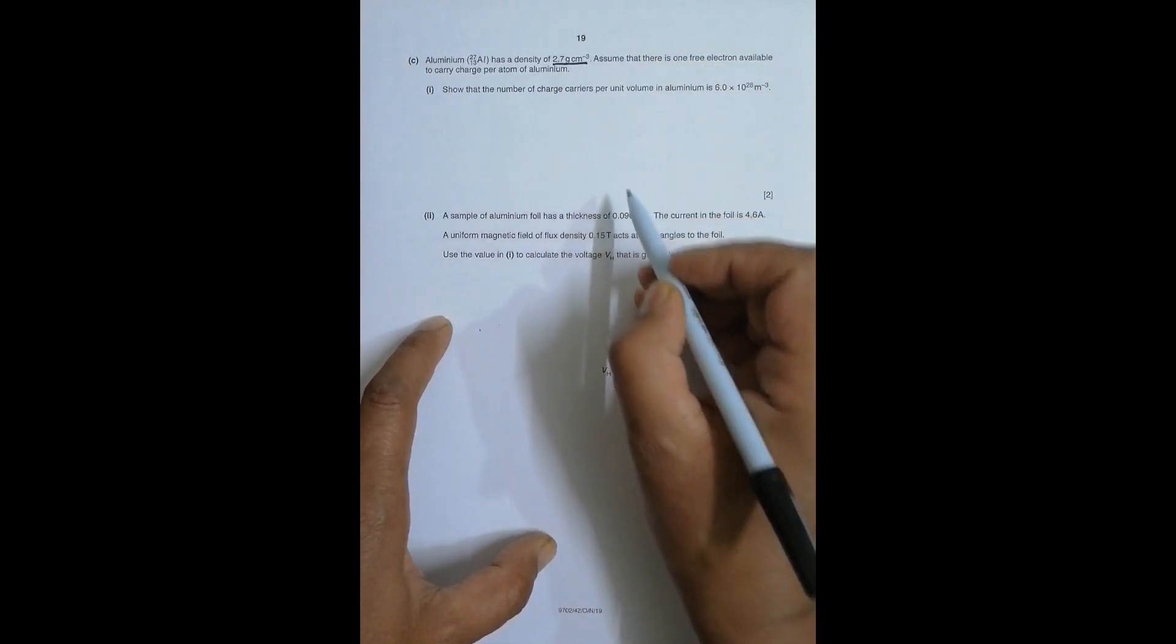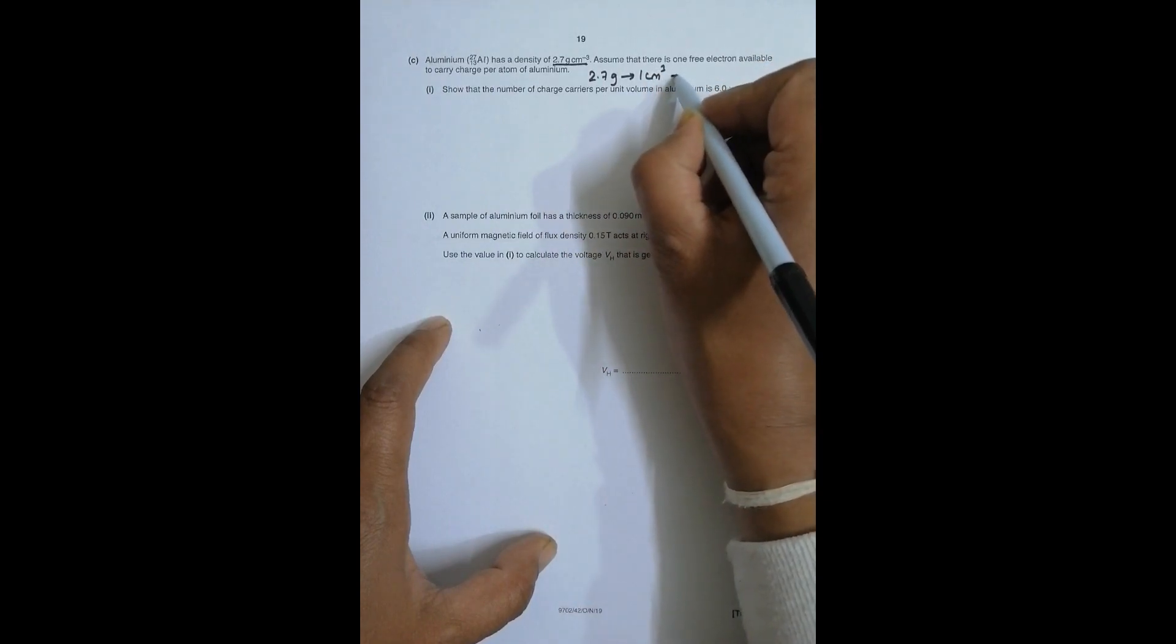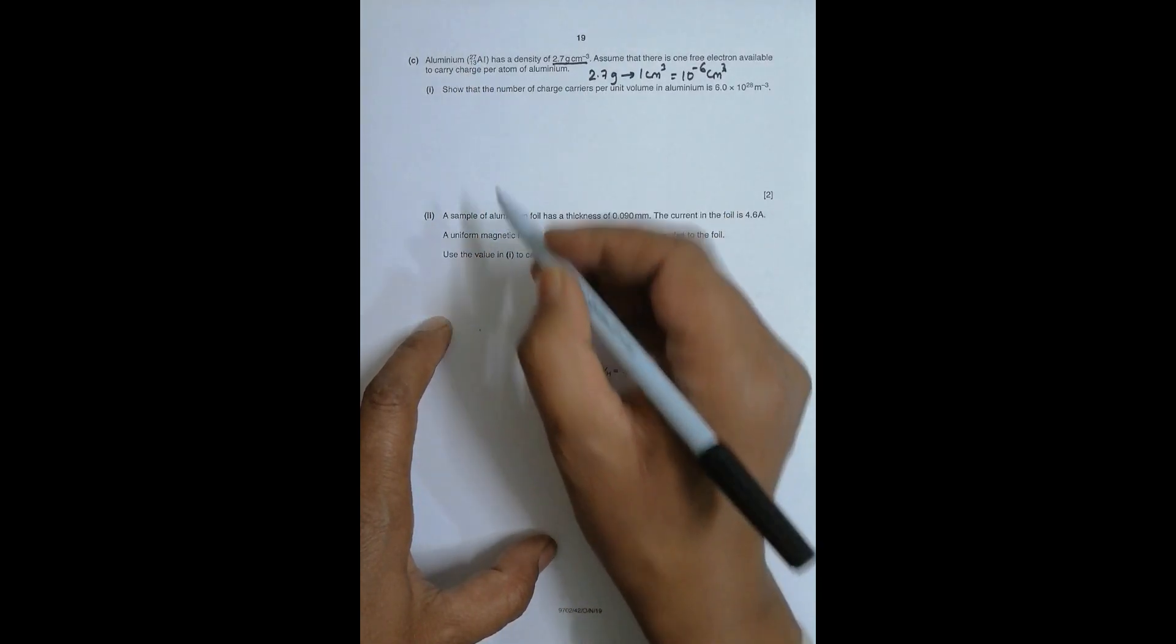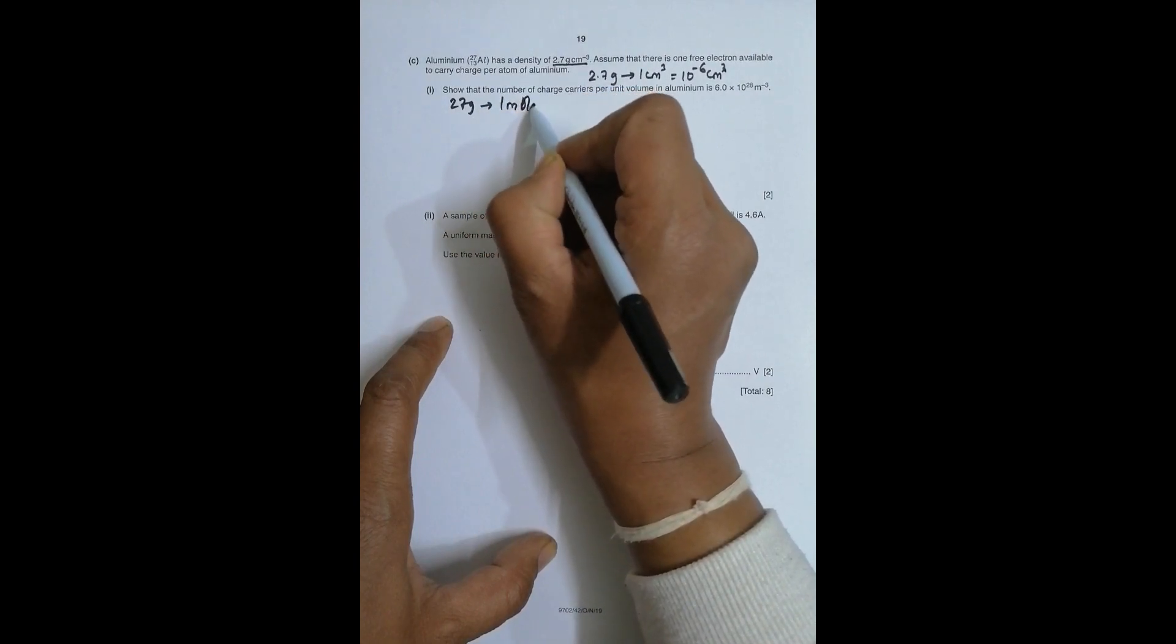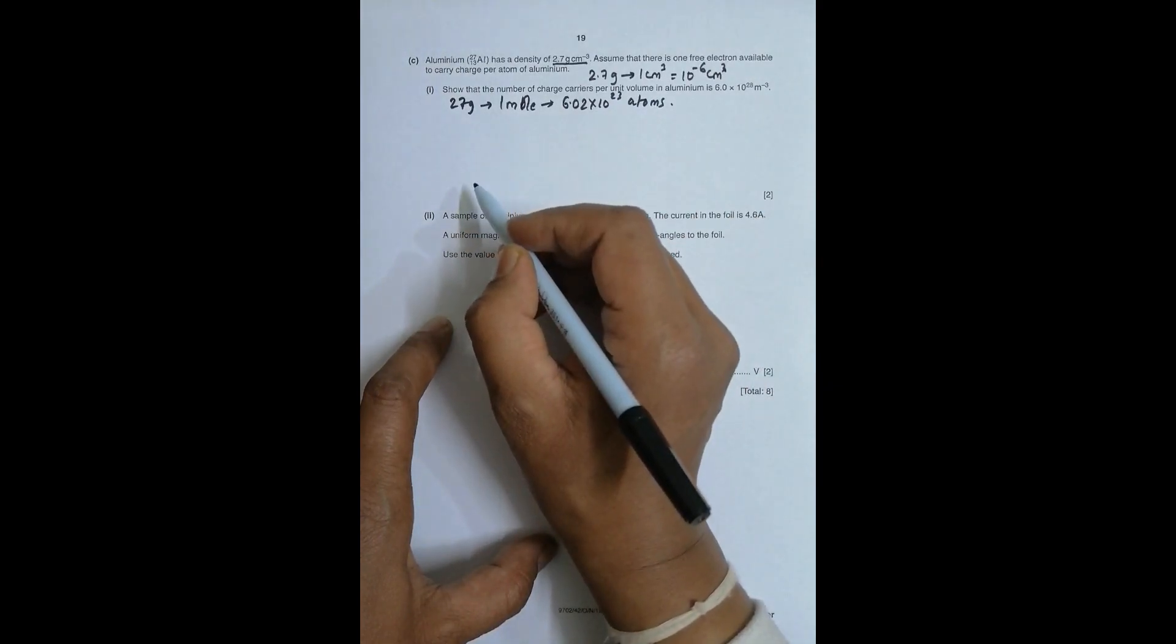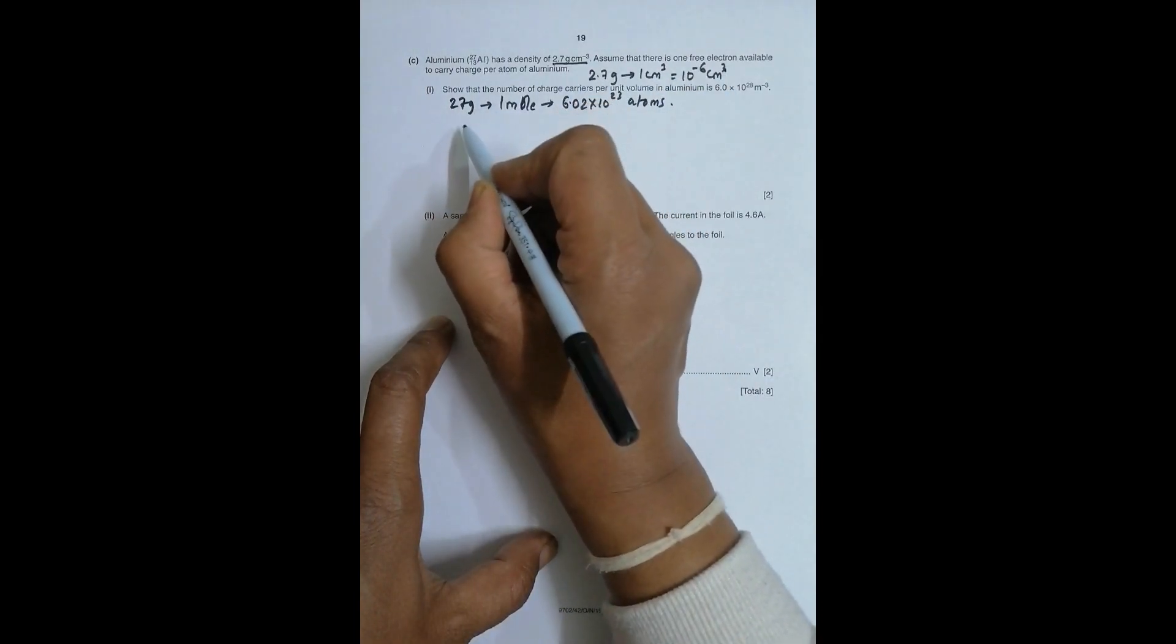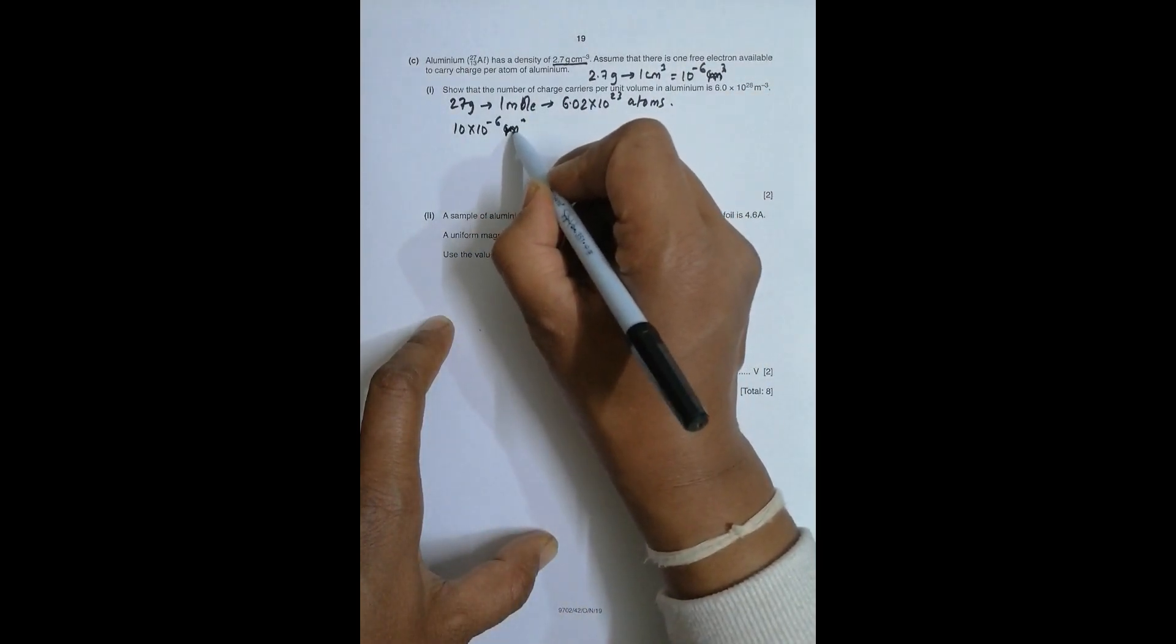First, density is 2.7 grams per cubic centimeter, that's equal to 10 to the power minus 6 cubic meters. Now the molar mass of aluminum is 27, so 27 grams of aluminum means one mole, and that means 6.02 times 10 to the power 23 atoms. So 2.7 grams means this much cubic centimeter, so 27 grams means 10 times 10 to the power minus 6 cubic meters.